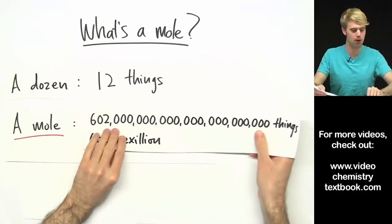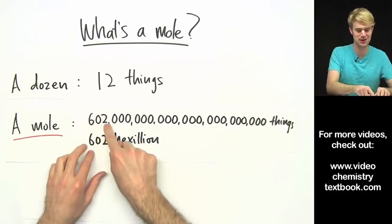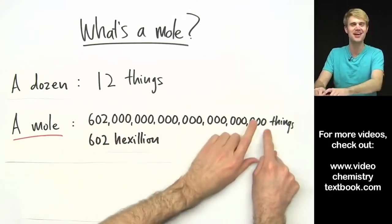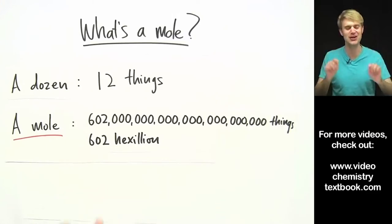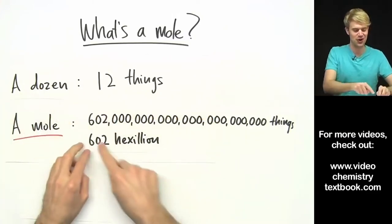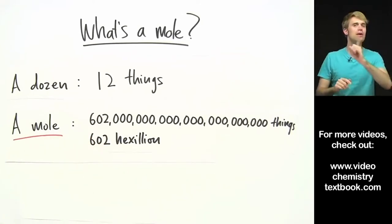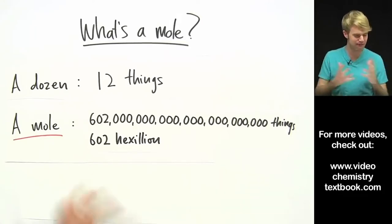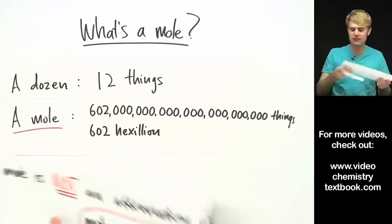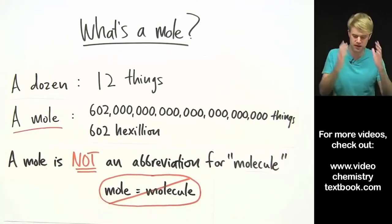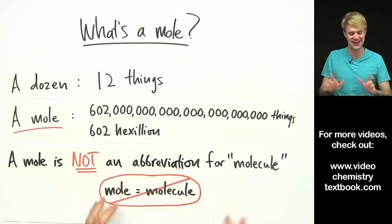A mole is like a dozen but way bigger. In a mole there are 602 hexillion things — that's 602 followed by 21 zeros. So a mole, like a dozen, is a name for a certain number of things: 12 things in a dozen, 602 hexillion things in a mole. One thing that confuses people about moles is they forget that a mole is a name for 602 hexillion things and think it's an abbreviation for the word molecule. If I write mole, I mean a group of 602 hexillion things — not a molecule.